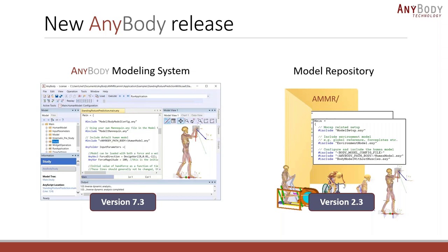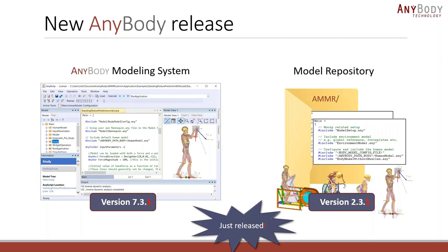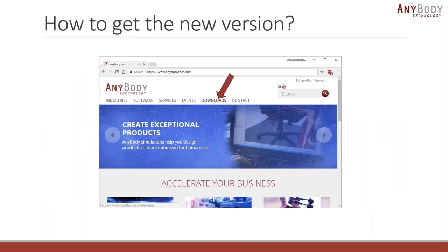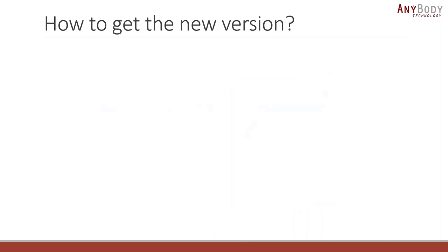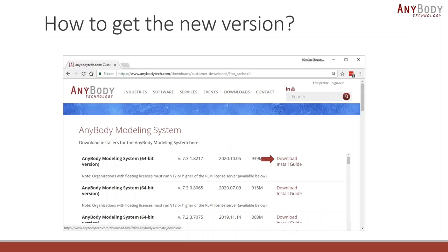The AnyBody Modeling System version 7.3 was released a few months ago, and just yesterday we released version 7.3.1 with some minor updates and improvements. If you haven't gotten that latest version, I really encourage you to download it. Together with that latest version is also an updated version of the model repository. You can download it by going to anybodytech.com, clicking the Downloads button, then Customer Downloads, to get version 7.3.1.